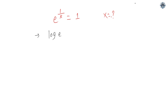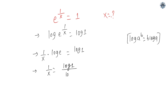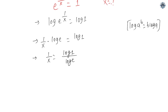Log of e to the power 1 over x is equals to log 1. We know that log a to the power b is equals to b times log a, so this will become 1 over x times log e, and on the right hand side log 1 remains the same. Bringing log e to the other side, it becomes 1 over x is equals to log 1 over log e. Taking the reciprocal of both sides, x is equals to log e over log 1.